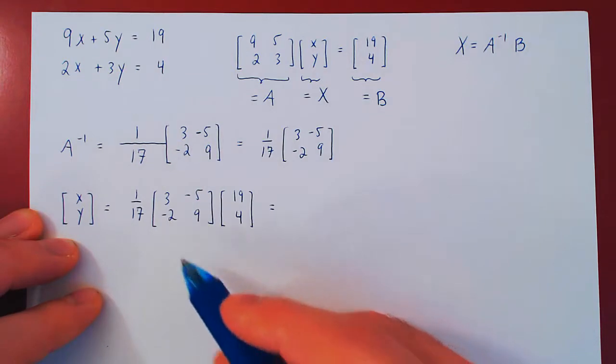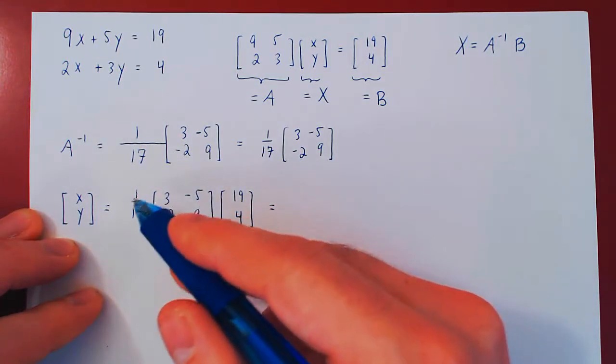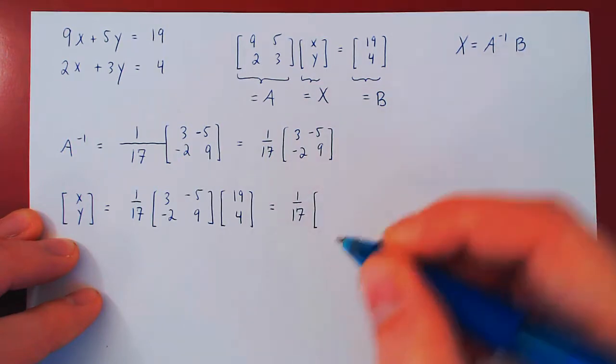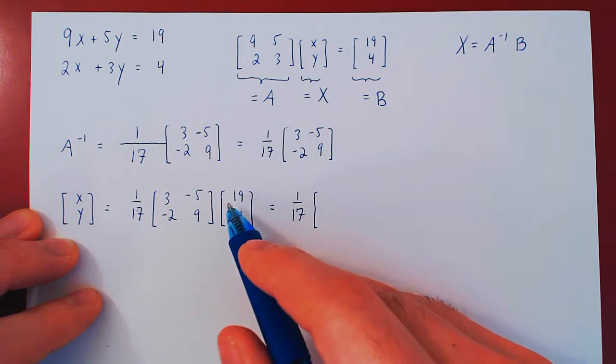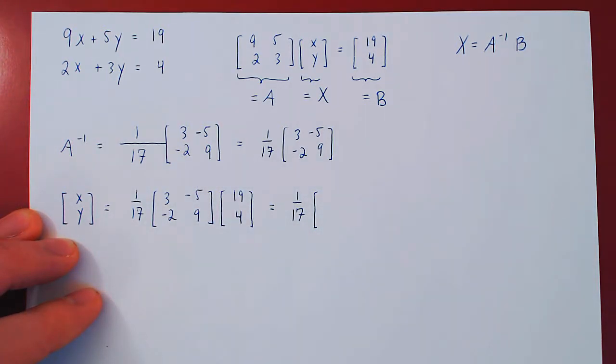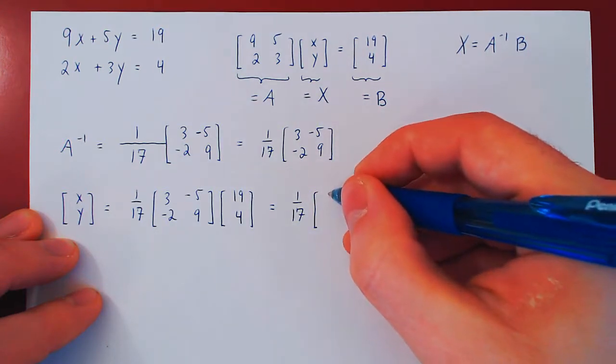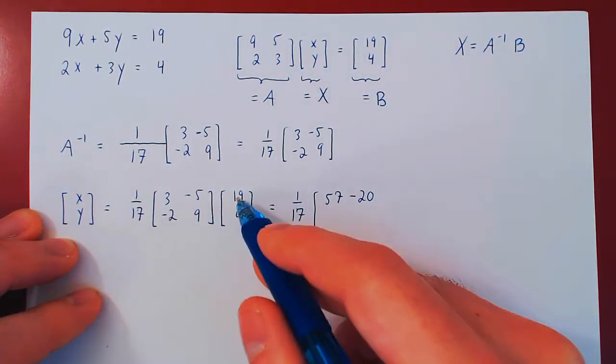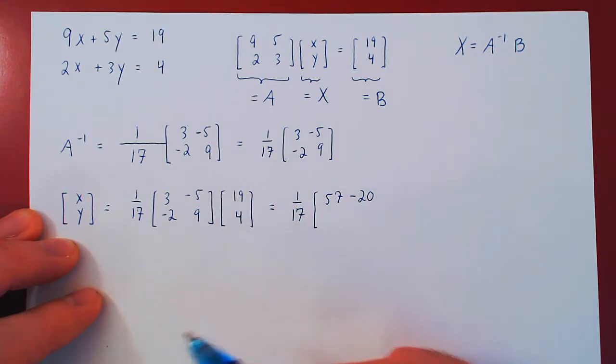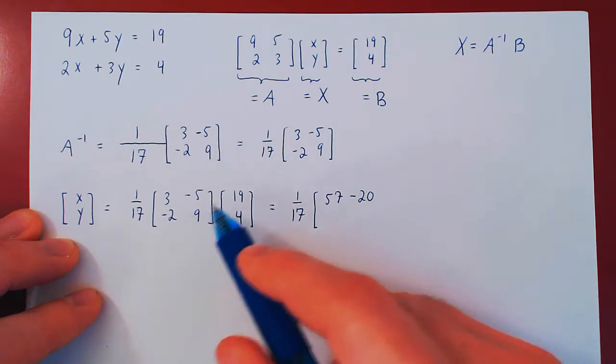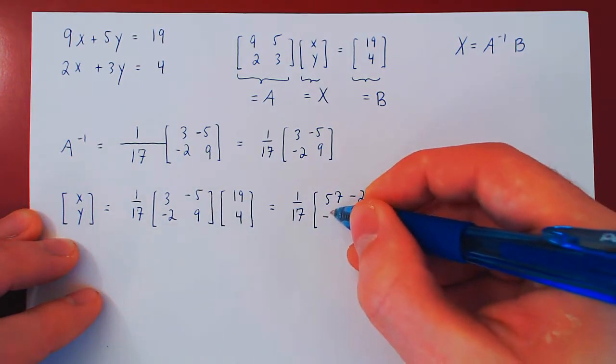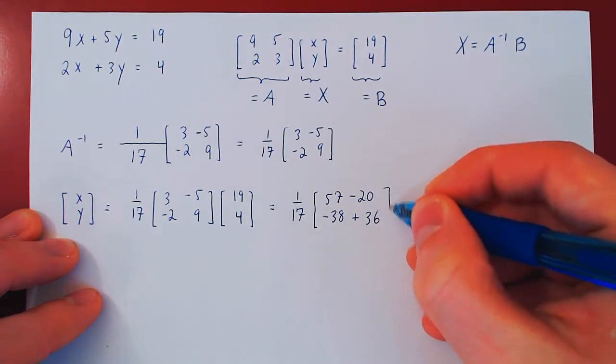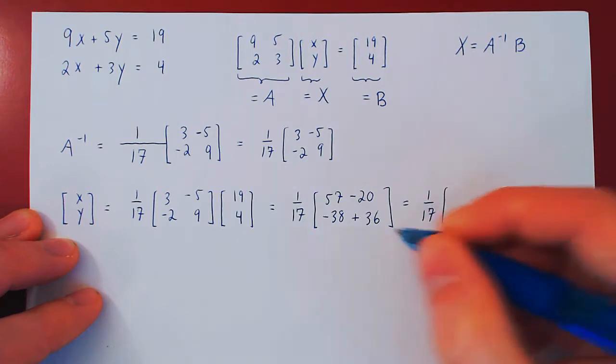Leave the 1 over 17 up front as a scalar multiple and multiply these two first. And then bring the 1 over 17 inside. 3 times 19, 30 plus 27 is 57, minus 5 times 4 minus 20. Then negative 2 times 19. Well, negative 2 times 10 is 20, 2 times 9 is 18. So that's negative 38. Plus 4 times 9, 36.